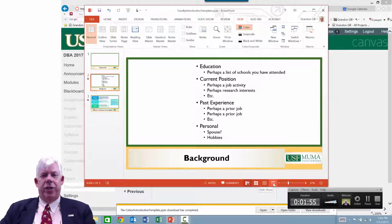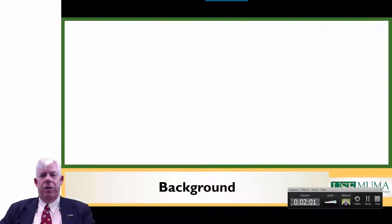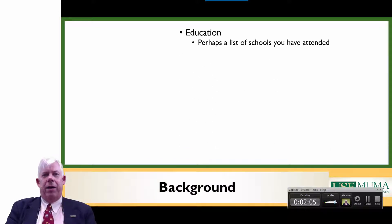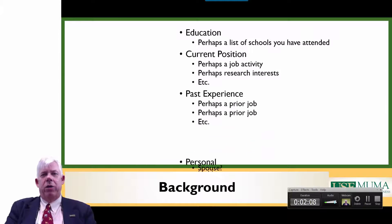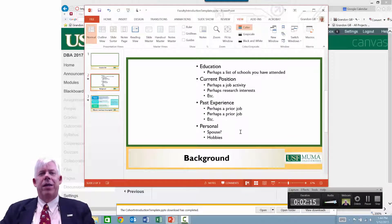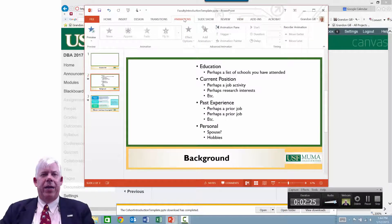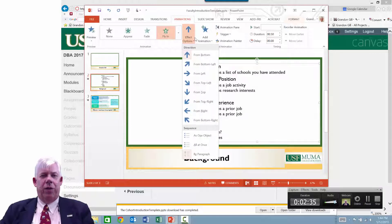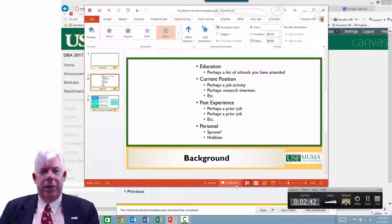If I run this as a presentation and hit Enter, it brings up the bullet points one at a time. When you're recording and talking at the same time, it's nice to have those animations. That's a very easy animation to create — if you come to the animation window, select an item, this is a fly-in animation and I change the effect option so it flies in by paragraph, one bullet at a time. Then it gives you a sample of what that looks like.